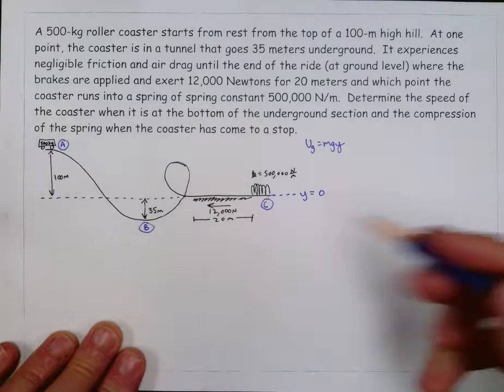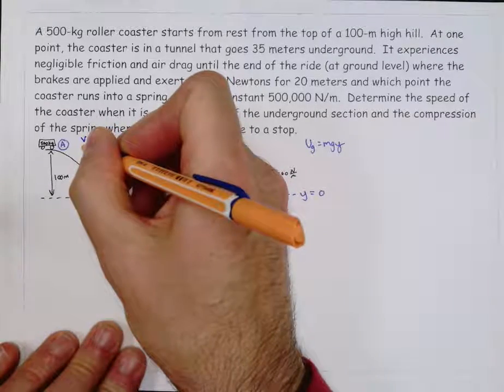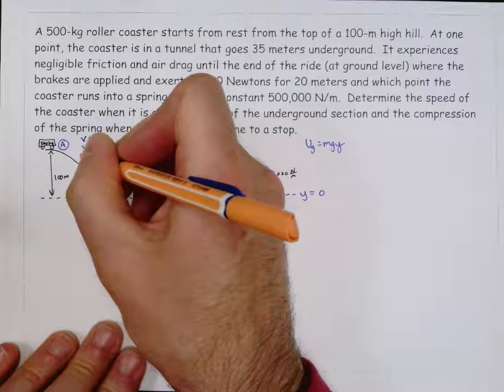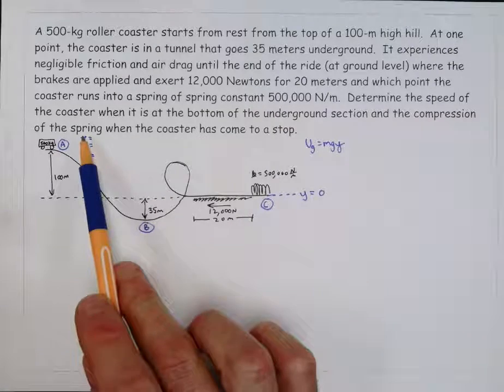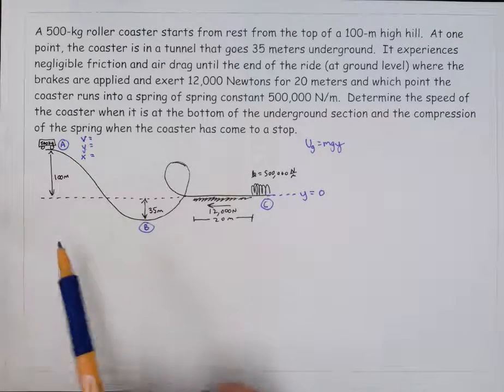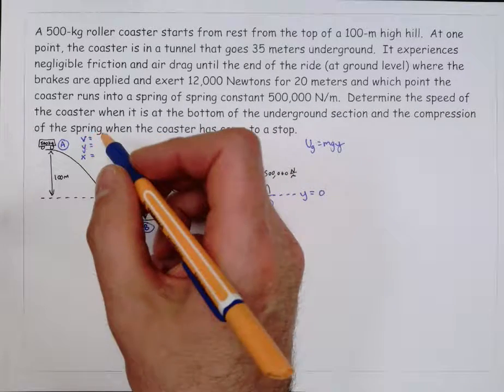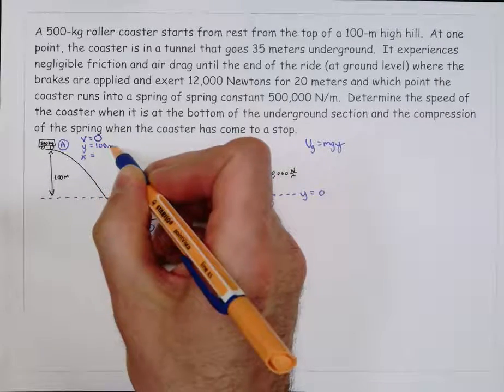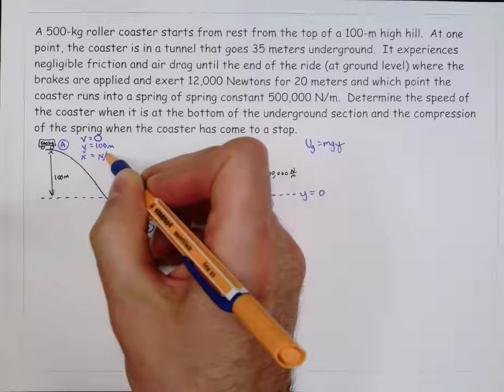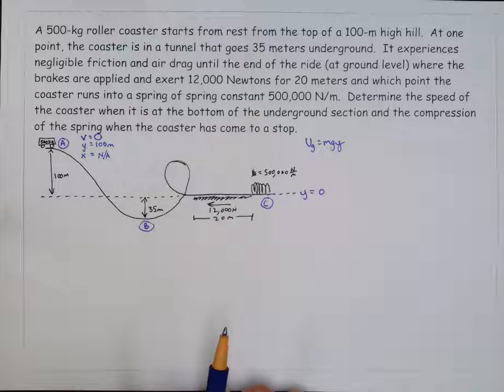I also, as part of the setup, at each of these three locations, like to write down what I know about speed, y coordinate, and compression of the spring, because those represent the three different types of energy that we deal with. Kinetic energy, gravitational potential energy, and elastic potential energy. So let's try that. So here, the problem does say it starts from rest at the top of the hill. The y coordinate at the top of the hill is 100 meters, and x is not applicable, because it's not touching a spring. If an object is not in contact with a spring, then there's not going to be any elastic potential energy associated with it.